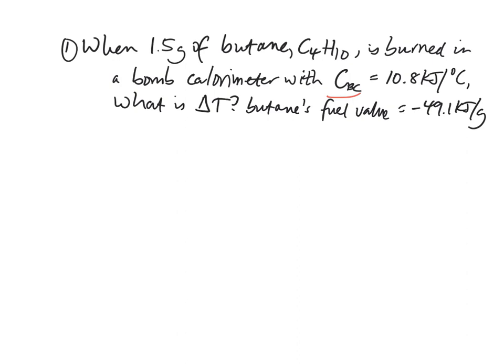Essentially what that means is if this bomb calorimeter warms up by one degree Celsius, that means it must have absorbed 10.8 kilojoules. If it warms up by two degrees Celsius, it must have absorbed two times 10.8 kilojoules, so around 21.6 kilojoules. If you have any delta t, any change in temperature, simply multiply it by this number and you'll get your overall energy change.